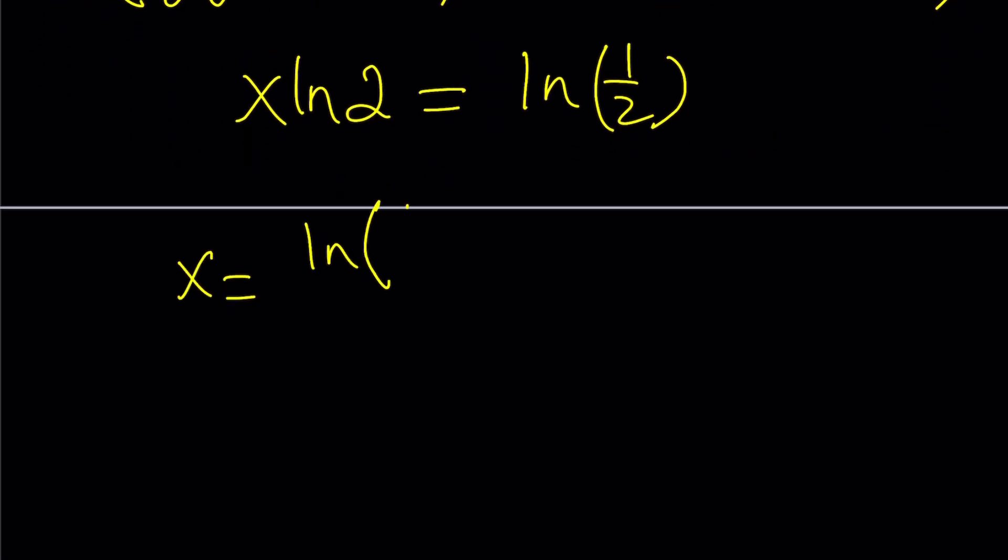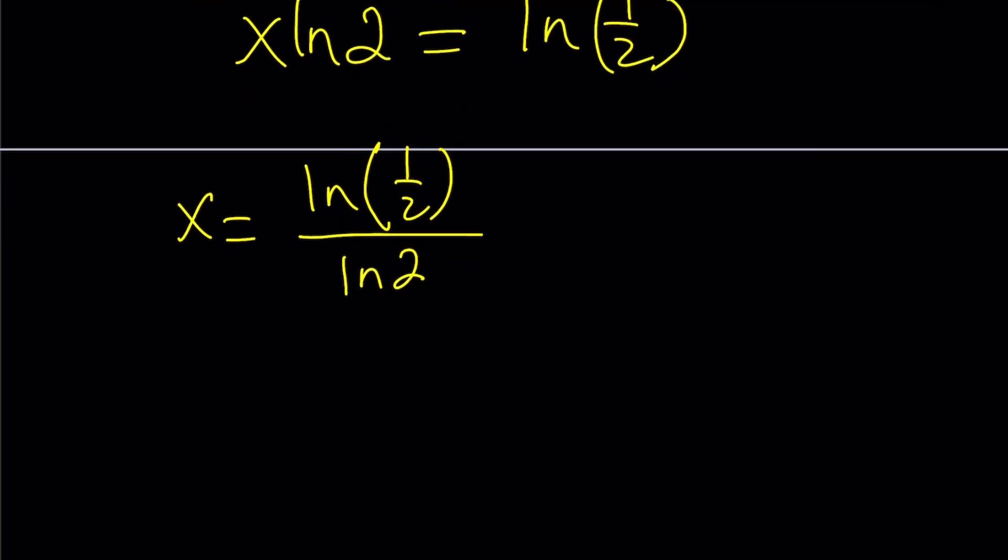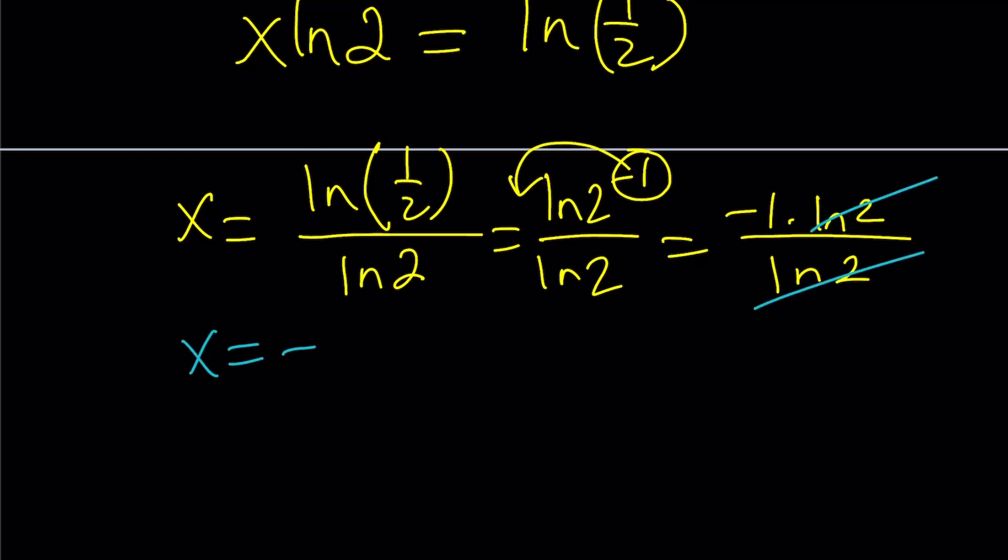x equals ln 1 half divided by ln 2. But what is ln 1 half? It is ln 2 to the power negative 1. So we can bring this up to the front, and that's going to become negative 1 times ln 2. ln 2 cancels out, and we end up with negative 1, which is a legitimate solution. x equals negative 1 is one of the solutions, and you can easily verify that.